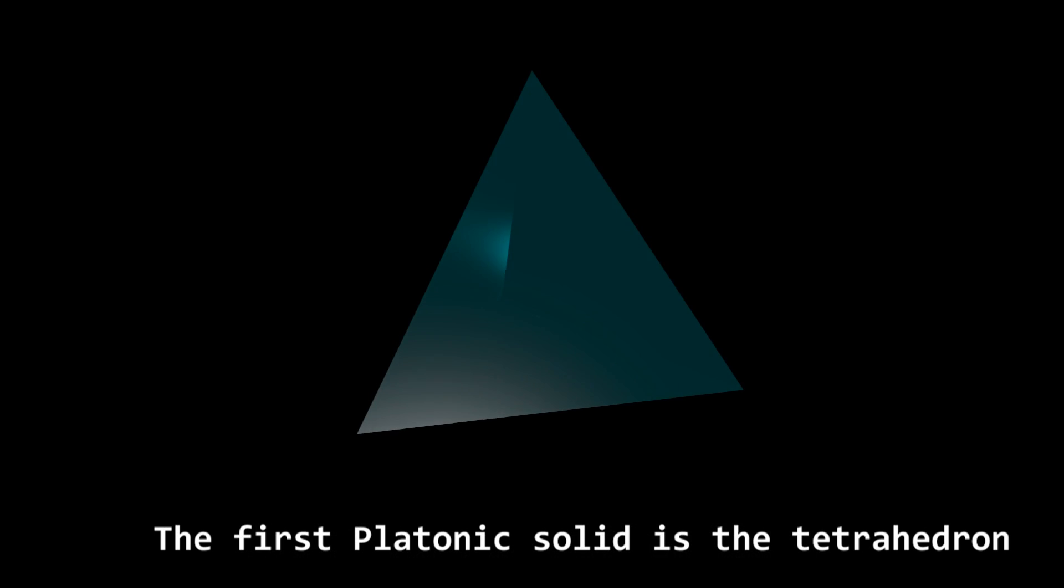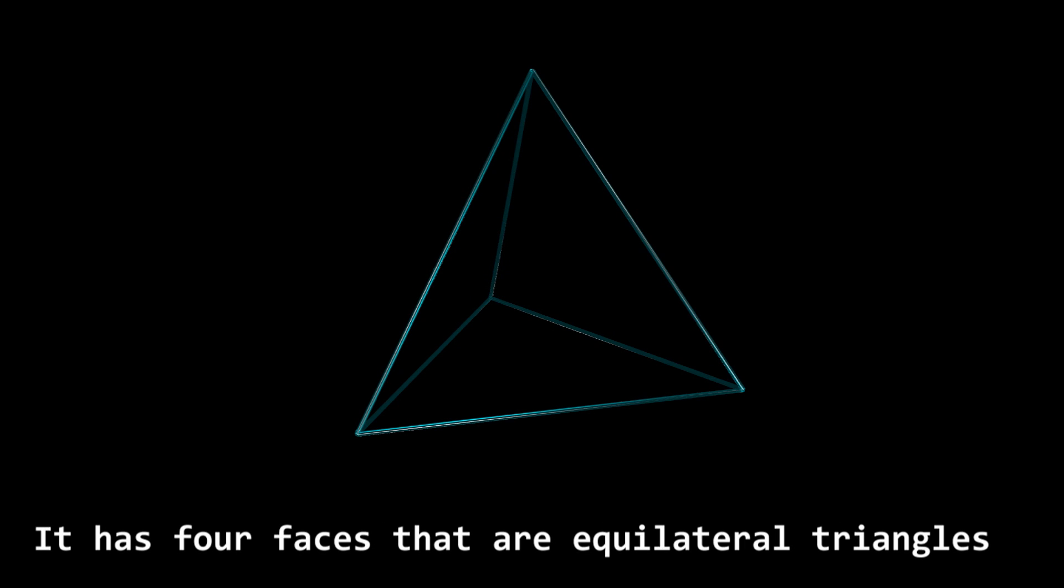The first Platonic solid is the tetrahedron. It has 4 faces of an equilateral triangle.